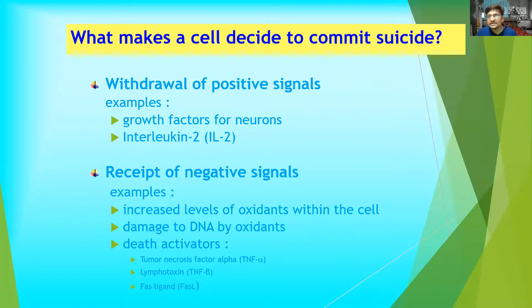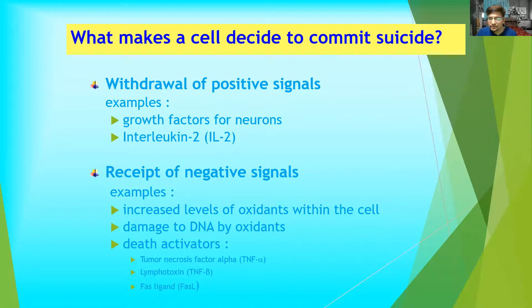What makes cells commit suicide? There are a few things required: one is the withdrawal of positive signals, or the induction of negative signals. For example, withdrawal of positive signals may be growth factors for neurons or interleukin-2, whereas negative signals include increased levels of oxidants, oxidative damage, or some chemical which is destroying the DNA.